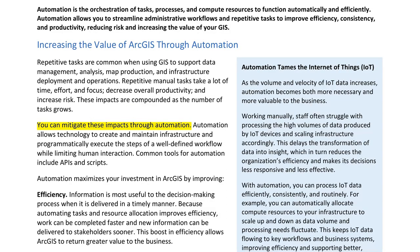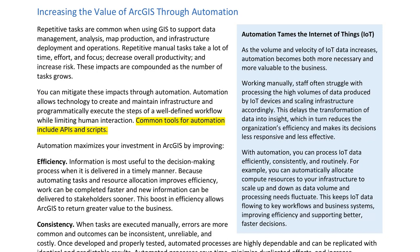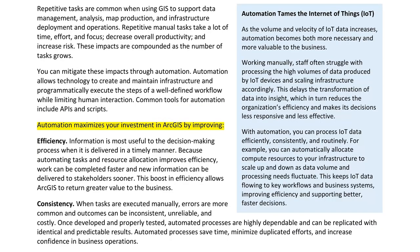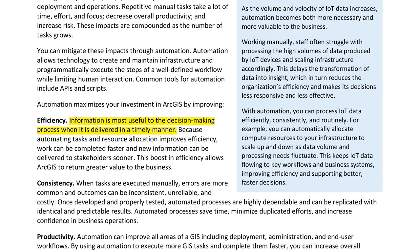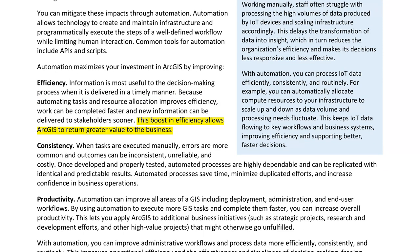You can mitigate these impacts through automation. Automation allows technology to create and maintain infrastructure and programmatically execute the steps of a well-defined workflow while limiting human interaction. Common tools for automation include APIs and scripts. Automation maximizes your investment in ArcGIS by improving efficiency — information is most useful to the decision-making process when it is delivered in a timely manner. Because automating tasks improves efficiency, work can be completed faster and new information can be delivered to stakeholders sooner.